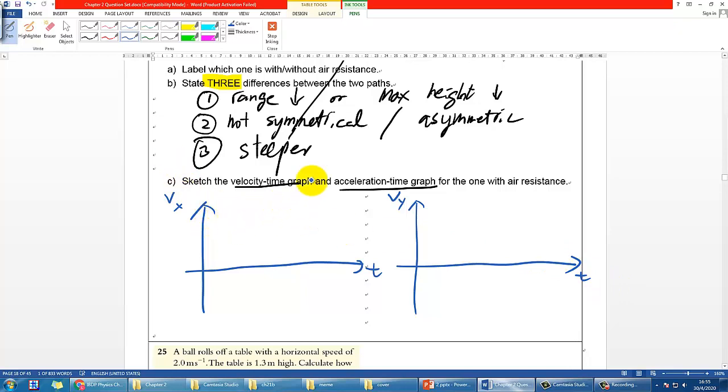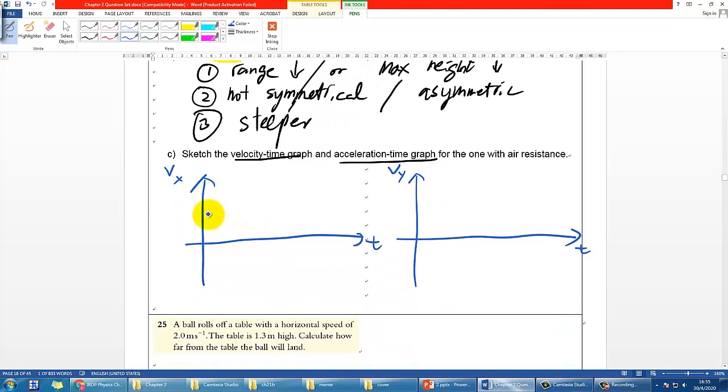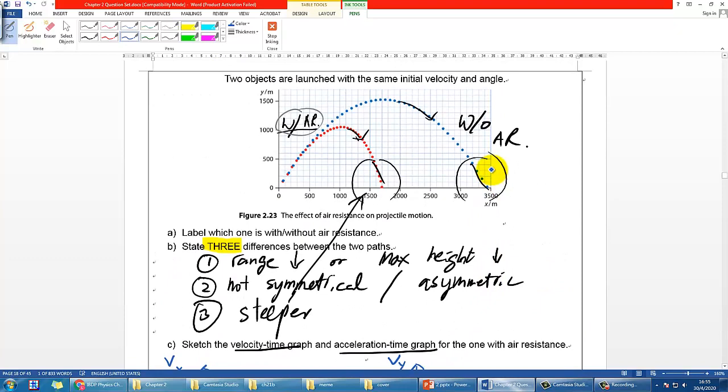For vx, again now this is without air resistance so I would use a blue color to represent. And you know horizontally there's no change in velocity so it's simply just the constant level.